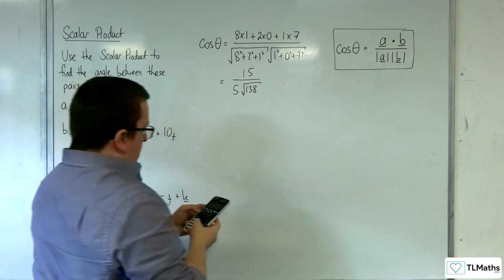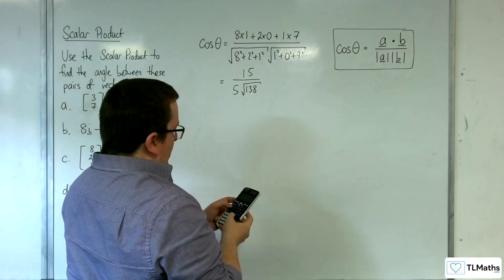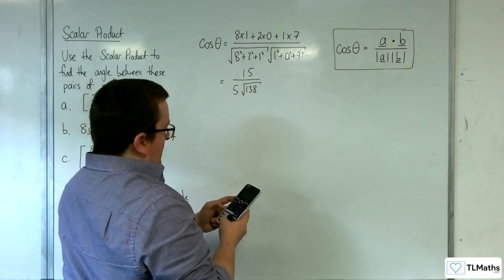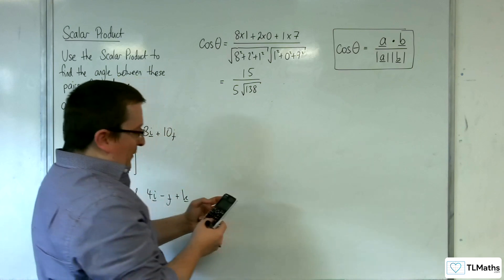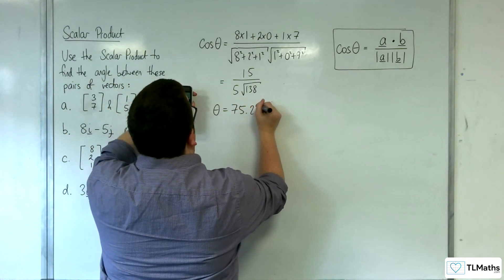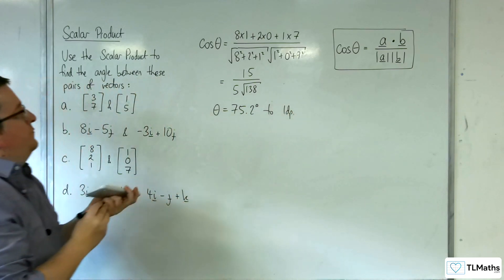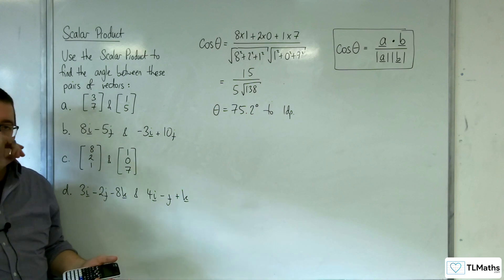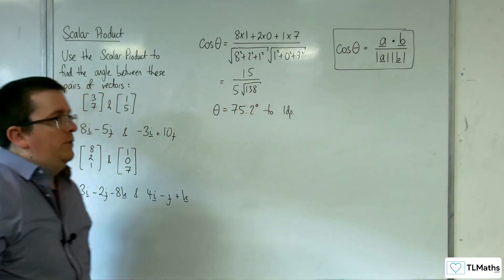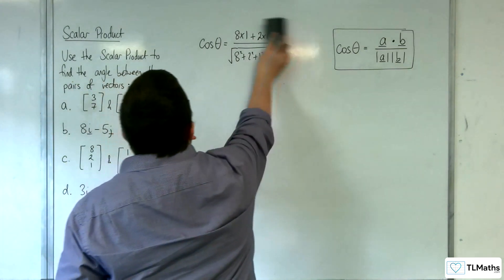So 15 divided by 5 root 138, and then inverse cosine that answer. We should get theta is 75.2 degrees to one decimal place. Doing the cosine rule in three dimensions isn't really that much harder than doing it in two dimensions when you're using the scalar product.